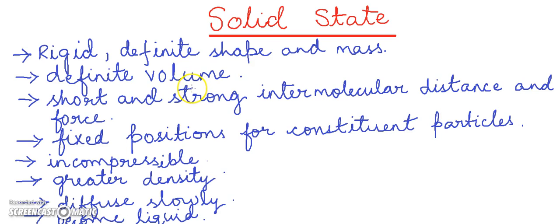The intermolecular distance between the molecules of solids is short. The intermolecular force present between the particles of the solid is strong. The constituent particles have fixed positions and they can oscillate about their mean positions.